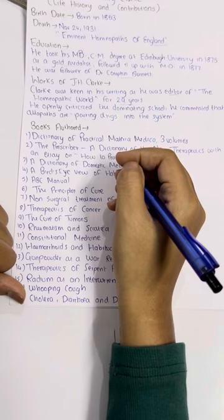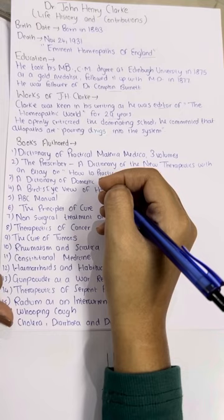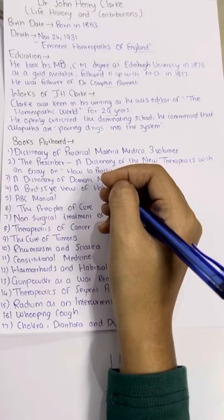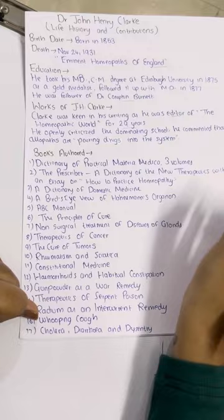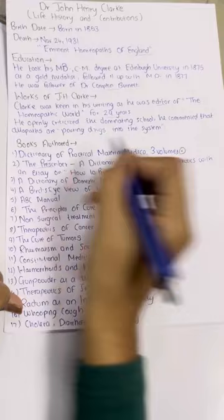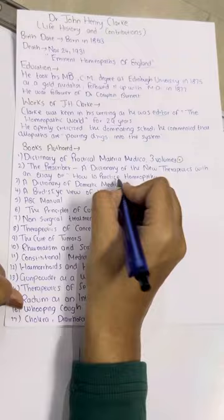John Henry Clark authored a huge number of books for homeopathy. The most famous is the Dictionary of Practical Materia Medica, which has three volumes — this is his most important contribution. Secondly, The Prescriber, which is a dictionary of new therapeutics with an essay on how to practice homeopathy, is the second most important work.